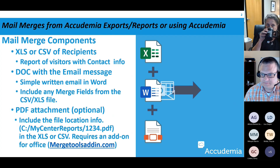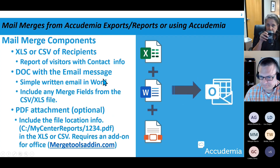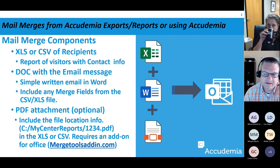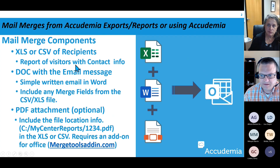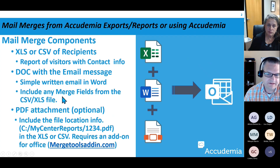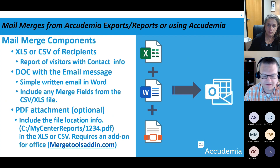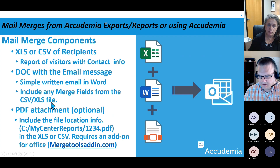Just going over the components here: we have an Excel file that we'll need, probably pulled from Academia — maybe a report of your visitors, or a list of your users, maybe a certain group of users — but it has to have their contact info in that Excel file. The other component is a Word document, which is really just going to be an email message that you write up, including all the information or details about what you're wanting to share with those folks.